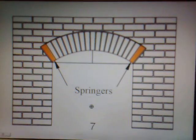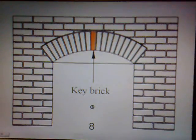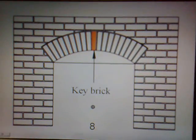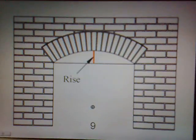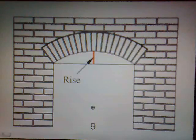Seven: the springers — this is the lowest voussoir on either side of the arch. Eight: the key brick — this is the central brick in the arch face and it's always placed last.